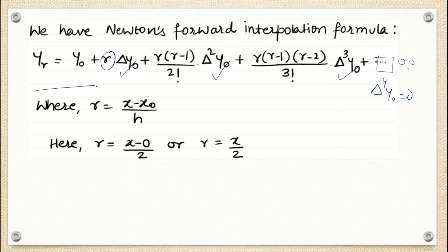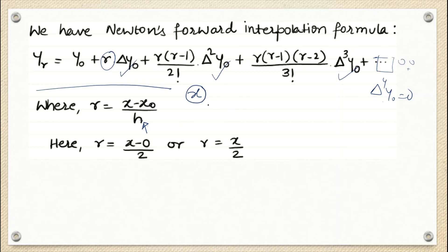Now we only need to find R. The formula is R = (x − x_0) / h, where h is the difference between successive x values and x_0 is the first x entry. Since we are finding the general interpolating polynomial, we keep x as a variable. So R = x / 2.